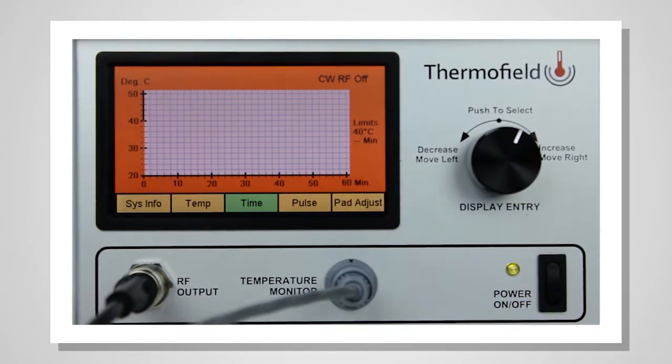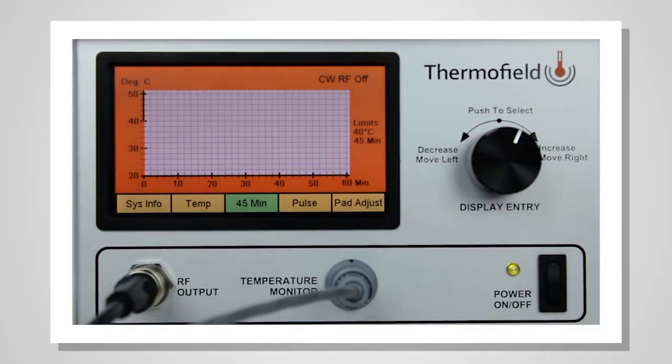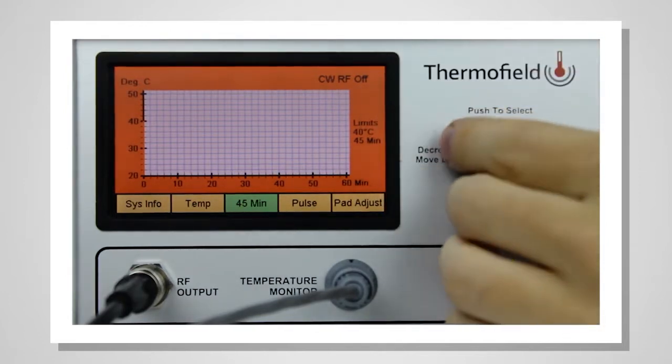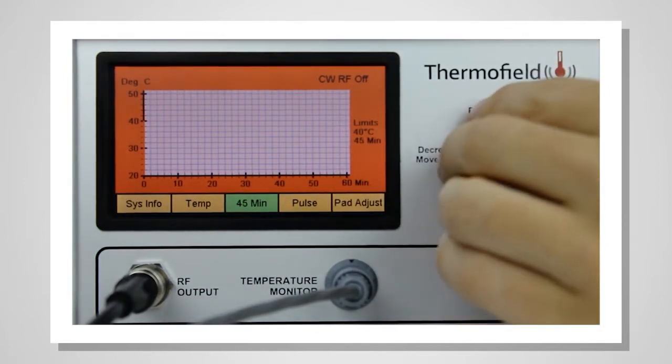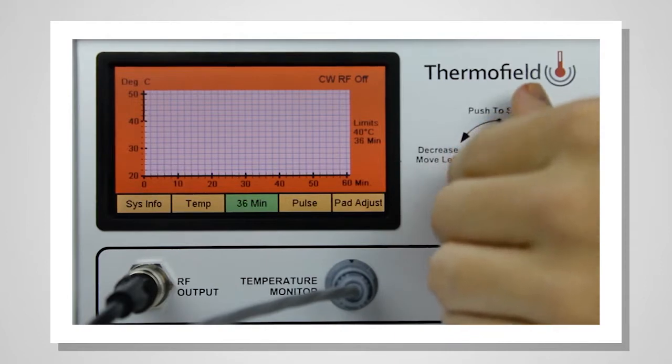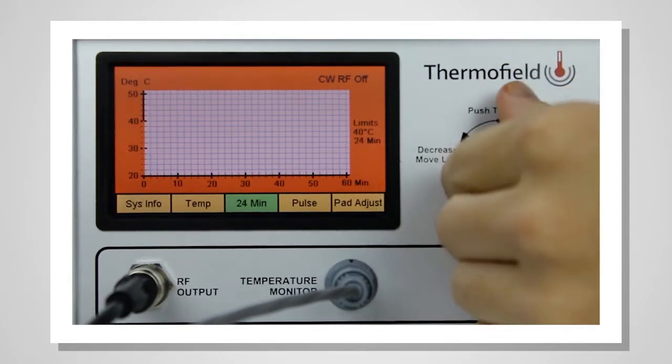The time pane will now be highlighted in green. Follow the same procedure to select the treatment time. Push the selector knob and rotate it to select your desired treatment time. The graph will chart the temperature over time, calculating the thermal density delivered to the patient.